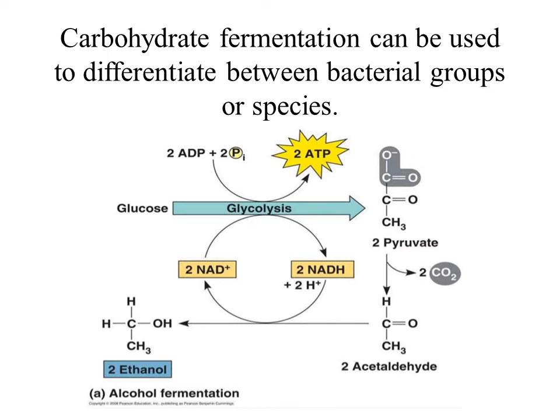The next test we'll look at is going to utilize carbohydrates. It is called the phenol red broth test. A process called fermentation will also be used, where we will starve the microbe of its needed oxygen. When we starve it of oxygen, it will utilize the carbohydrate to generate NAD, which will be used back in step 6 of glycolysis. The purpose of fermentation is to generate NAD.